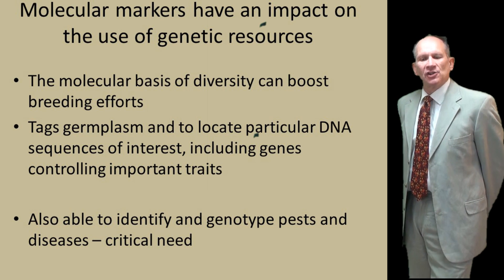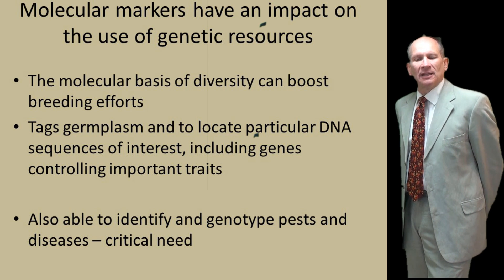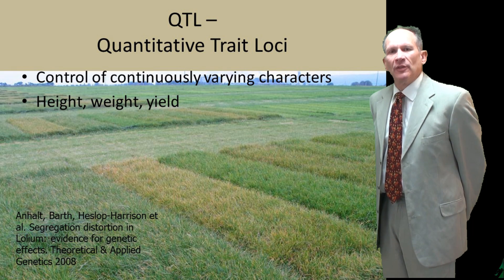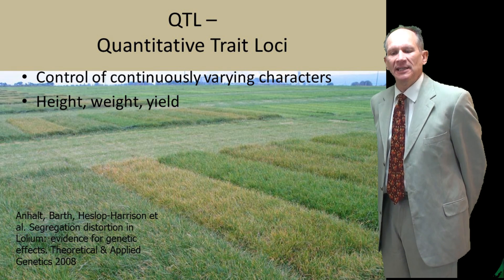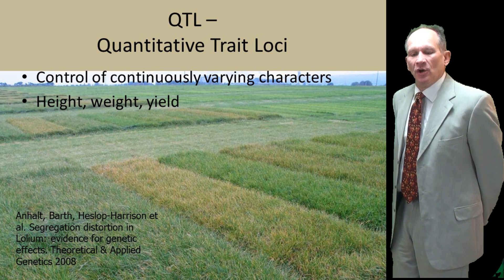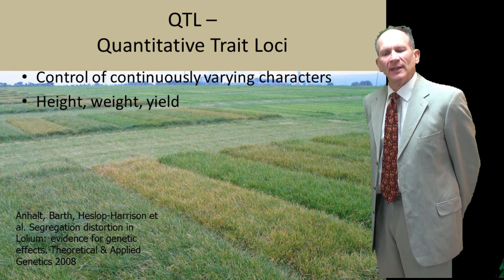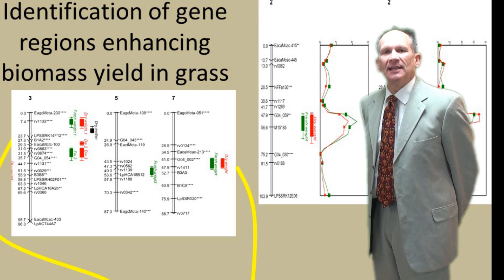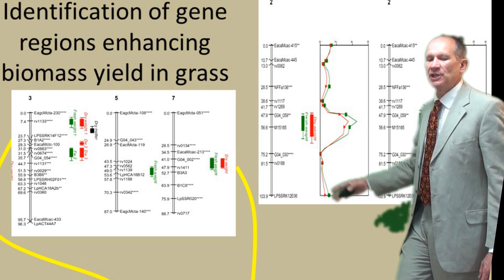Molecular markers are having an impact on the use of genetic resources, and understanding the molecular basis of diversity can boost breeding efforts. One can study quantitative traits — things that are continuously varying like height, weight, and yield. This is an example with colleagues in Ireland who have been looking at these traits in grasses; we can identify using genetic markers where the pieces of DNA involved in giving biomass yield increases are located along the order of genes.